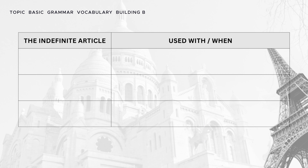Indefinite articles are used before nouns to indicate that you are talking about an unspecified or general item. They are crucial in French grammar for describing things or people in a non-specific manner.